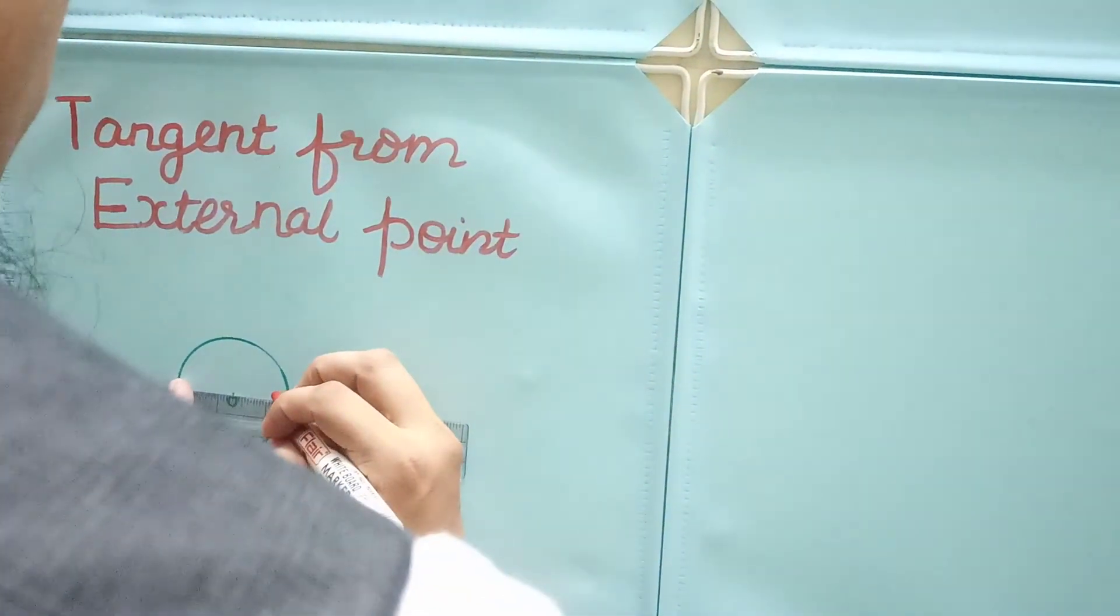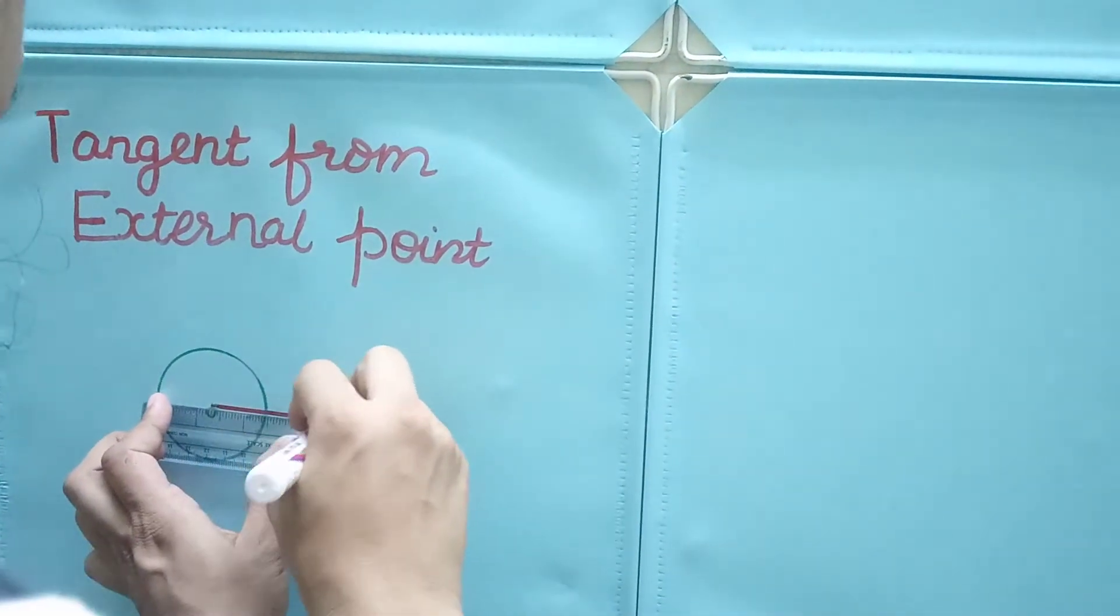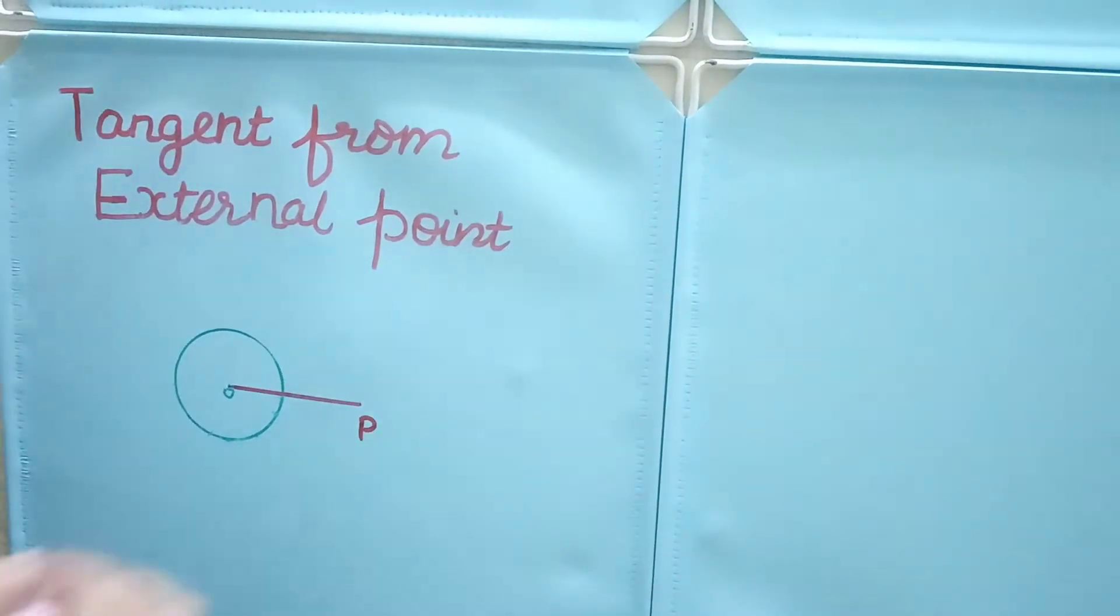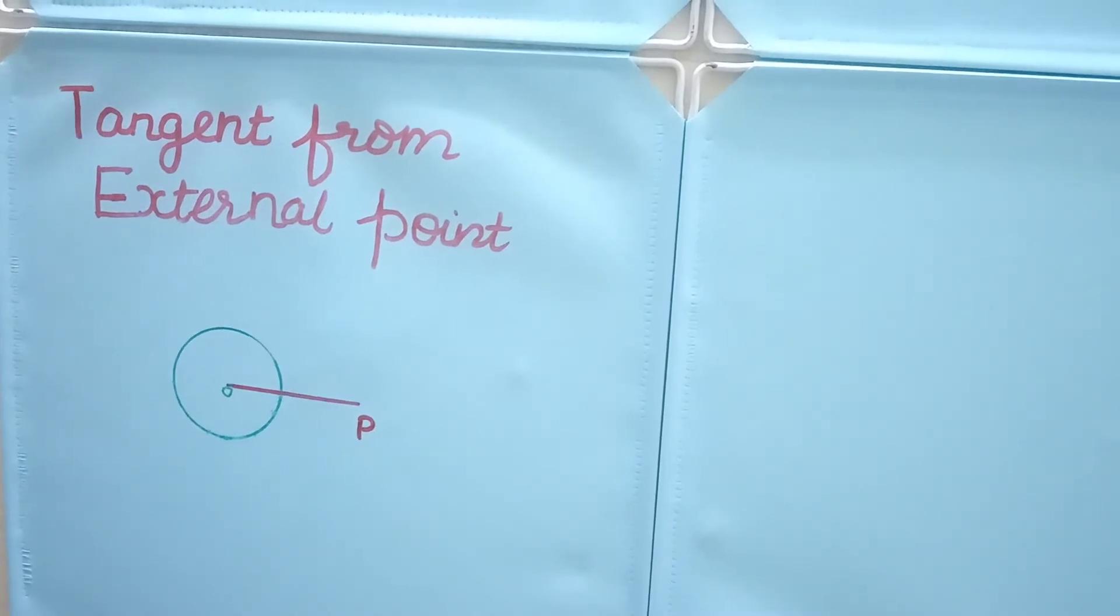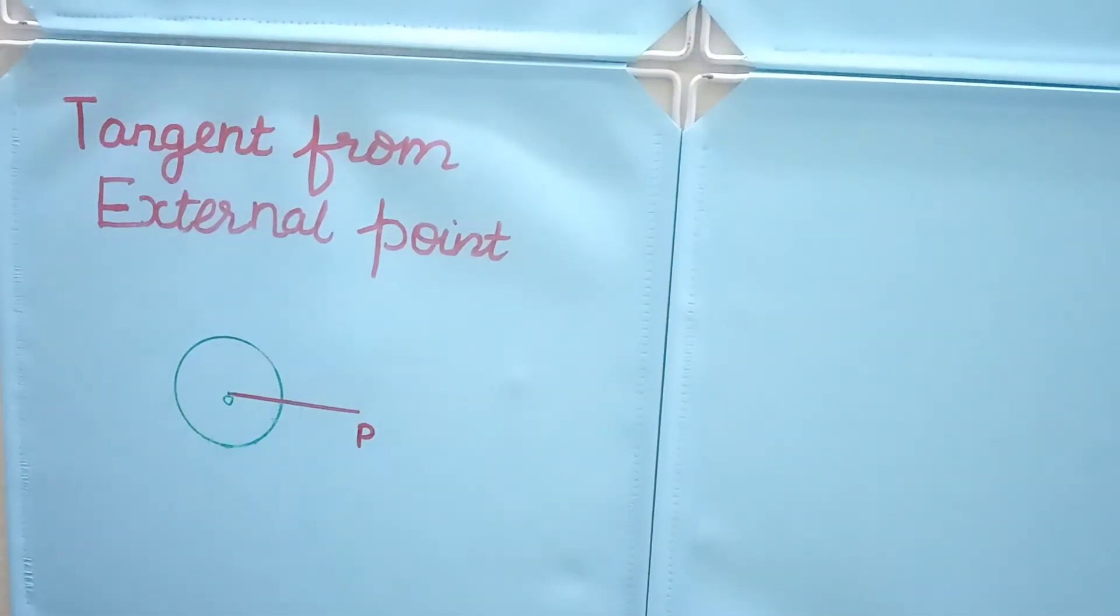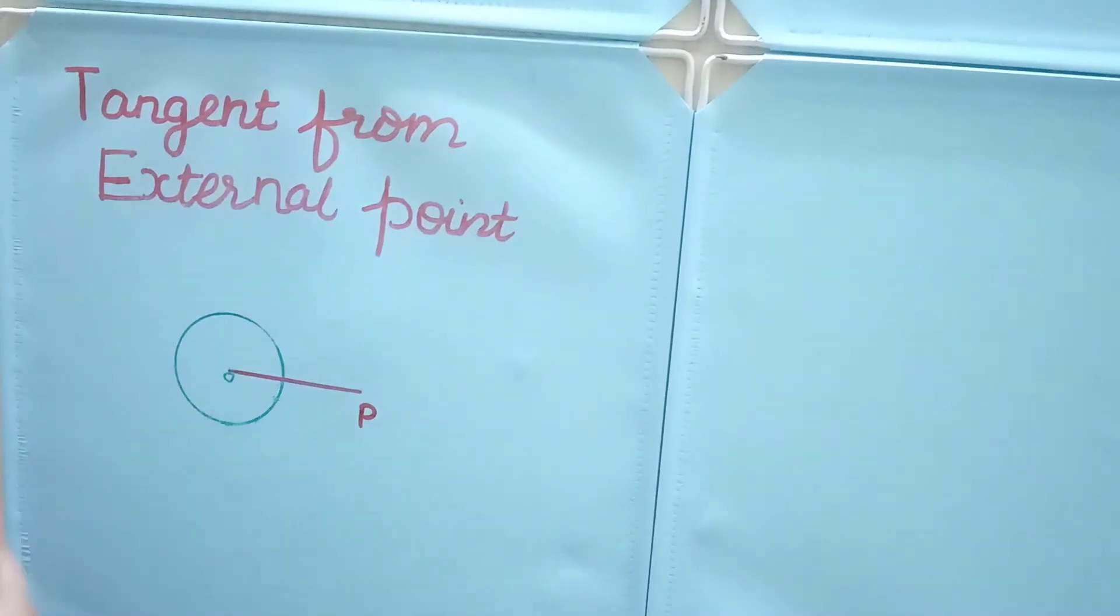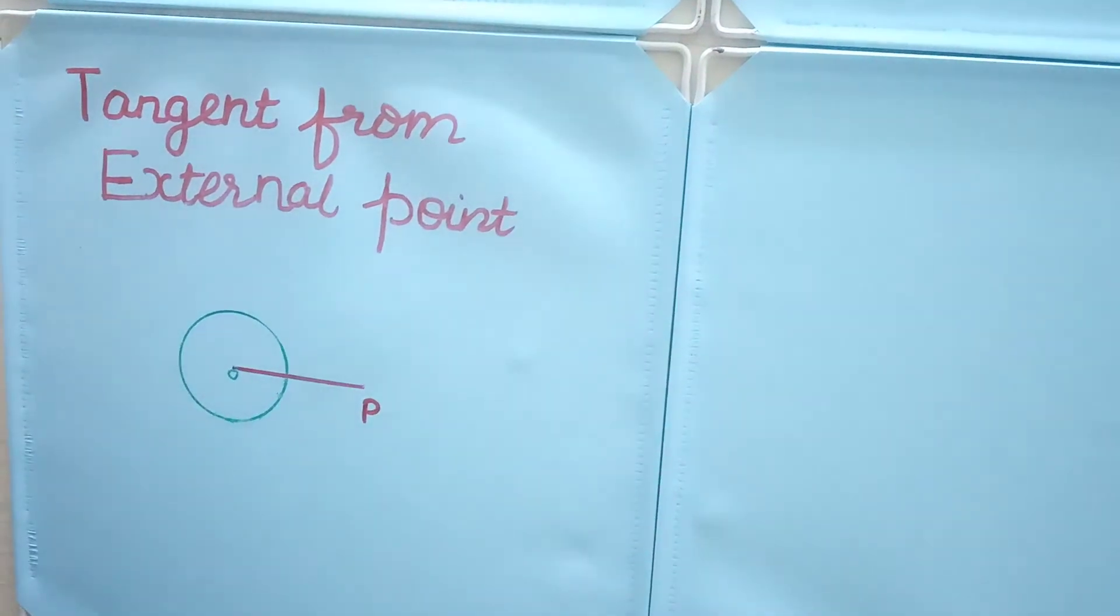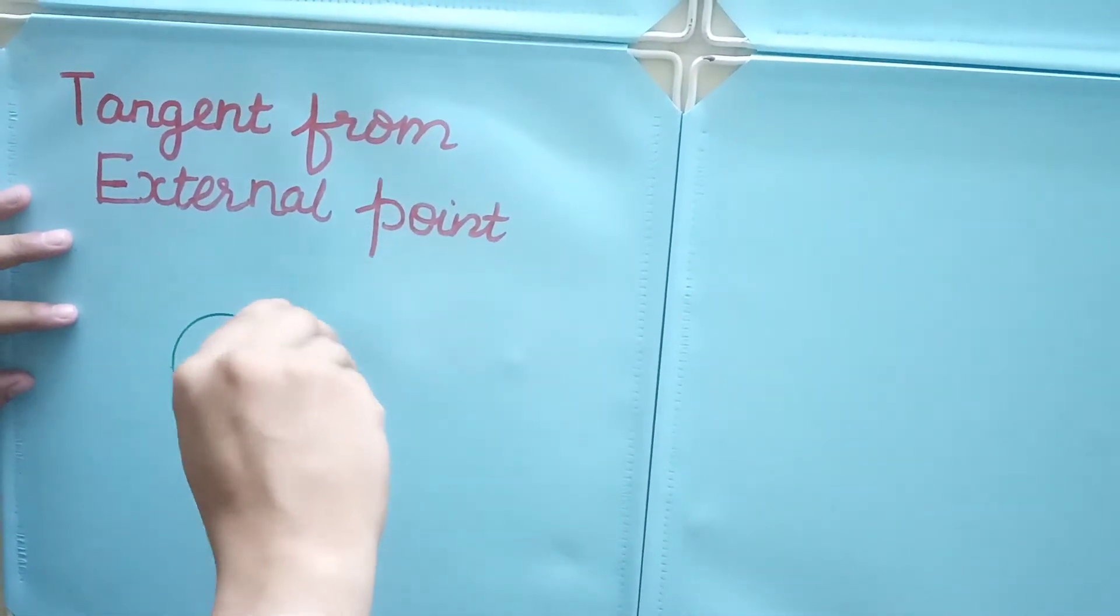And we want to draw a tangent from that external point P to this circle. So how will we draw it? We will draw a perpendicular bisector of OP. The procedure for drawing a perpendicular bisector has been told in earlier videos; you can refer to them.